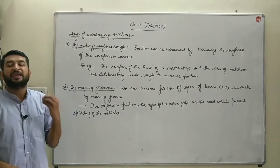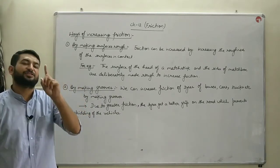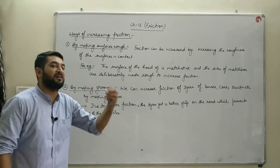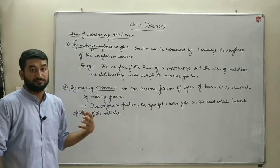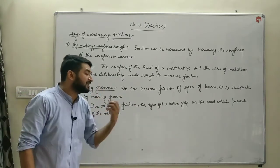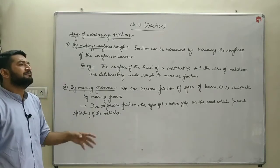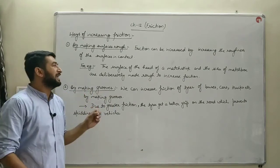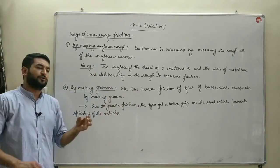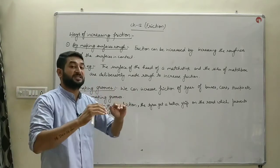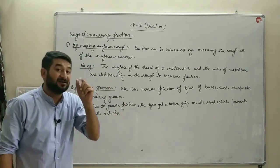Now, the ways to increase friction. We can increase friction between two objects by two methods. The first is by making the surfaces in contact more rough — more roughness means more frictional force. For example, the matchstick and the side of the matchbox are both deliberately made rough. Due to the roughness of both surfaces, more friction is generated, more heat is produced, and the matchstick lights up quickly.